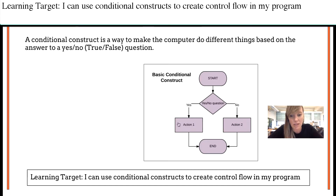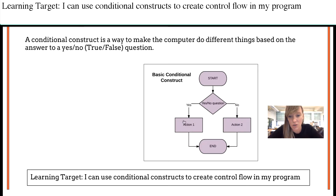Here is a very basic flowchart of a construct. You start the program, there's a yes or no question. If the answer is yes, you perform action one. If the answer is no, you perform action two. Both of those flow to termination — after action one is finished, it terminates; after action two is finished, it terminates. The conditional construct is the diamond block with the two actions. It's a question, and then the action is based on the answers to that question.